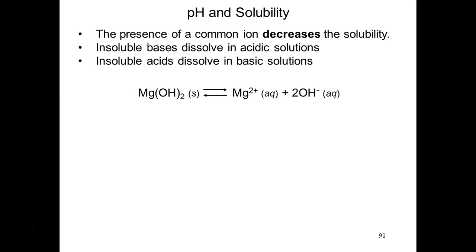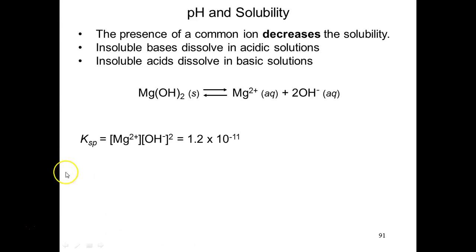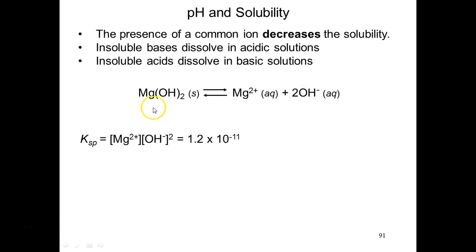Let's take an insoluble base or a partially soluble base — magnesium hydroxide. Its equilibrium expression can be written as the concentration of magnesium multiplied by the concentration of hydroxide raised to the second power. That second power comes from the stoichiometric coefficient of 2 in this equation.